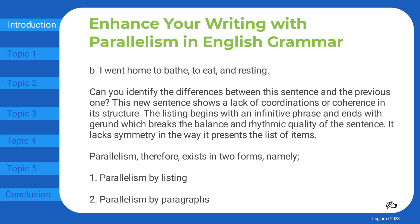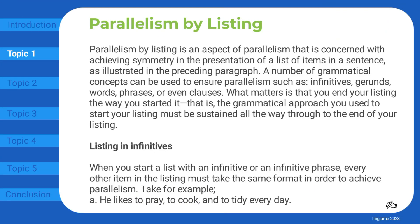Parallelism, therefore, exists in two forms, namely: parallelism by listing and parallelism by paragraphs. Parallelism by listing is an aspect of parallelism that is concerned with achieving symmetry in the presentation of a list of items in a sentence, as illustrated in the preceding paragraph.